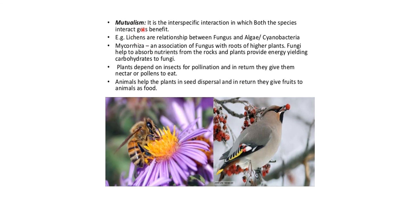Mutualism is an interspecific interaction in which both species benefit. For example, lichens are a relationship between fungus and algae. In mycorrhizae, fungi associate with roots of higher plants: fungi help absorb nutrition from rocks and the plant provides energy-yielding carbohydrates to fungi. Plants depend on insects for pollination and in turn provide nectar or pollen to eat. Animals help plants in seed dispersal and in turn receive fruits as food.